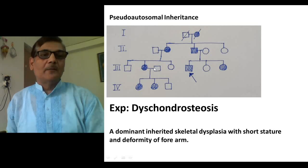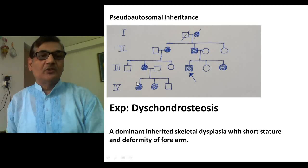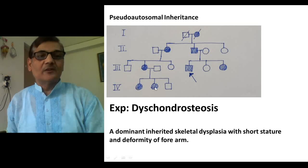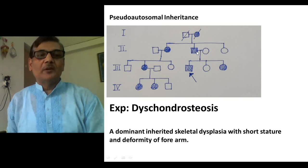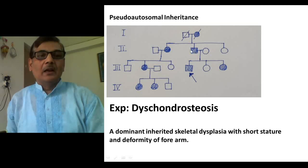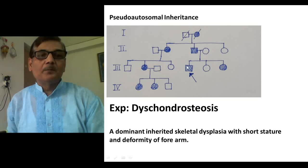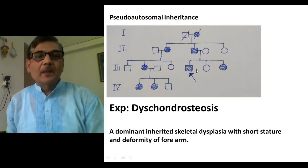This affected female was married to a normal person, and in the next generation they had three children, out of which one female child was a sufferer. Again, she was married to a normal person, and in the fourth generation their two female children were showing the trait or showing the disease. Meanwhile, this male individual also obtained the mutant gene-containing X chromosome from his mother and therefore showed the trait. He was then married to a normal female, and in the next generation this couple had three children, two of whom suffered from the disease.